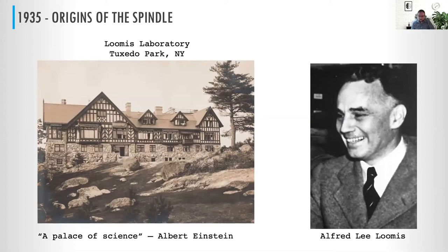Because he wanted to be a gentleman scientist, Loomis purchased a mansion in Tuxedo Park, New York, stocked it with the latest scientific instruments, and invited the best scientists of the world with engraved invitations. From this Loomis laboratory, all sorts of exciting things emerged — most importantly, work that was responsible for the development and improvement of radar, which many credit with turning the tide for the Allies in World War II.